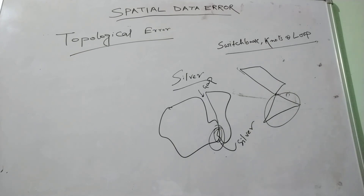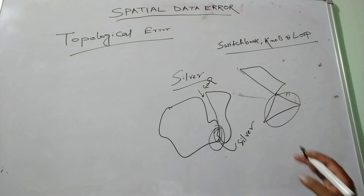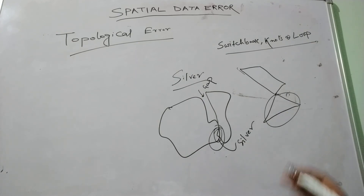So these are the basic spatial data errors found in the GIS database. When we are going to create the GIS database, we need to consider these topological and locational errors. Thank you for watching this video.